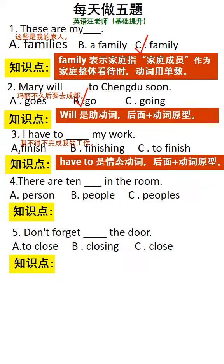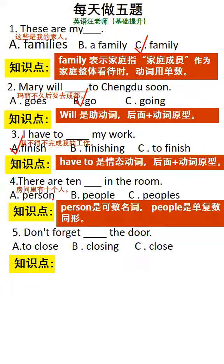第四题：There are ten people in the room. 屋里有十个人。person是可数名词，有单复数变化；people是单复数同形的词。这里表示十个，名词应表示复数意义，选择B选项。